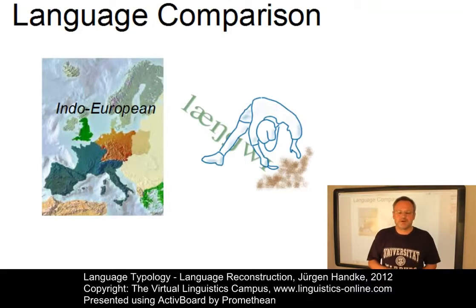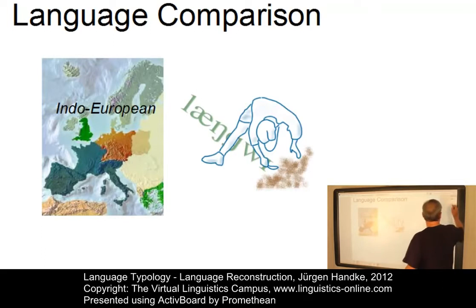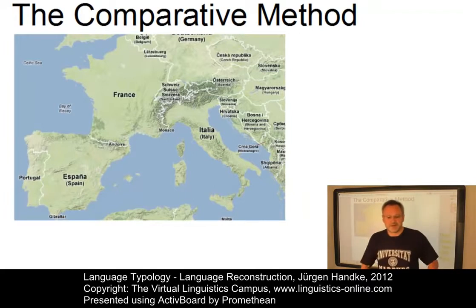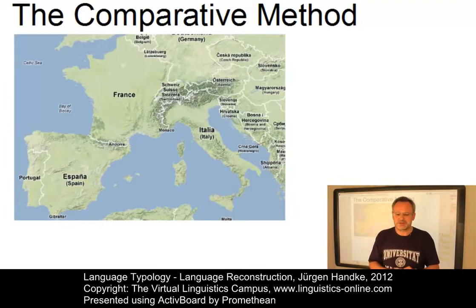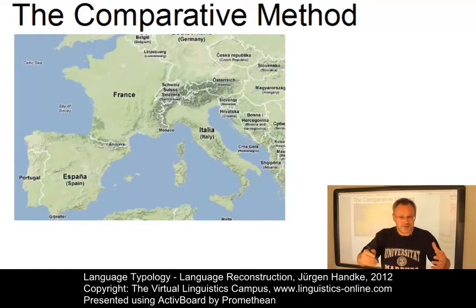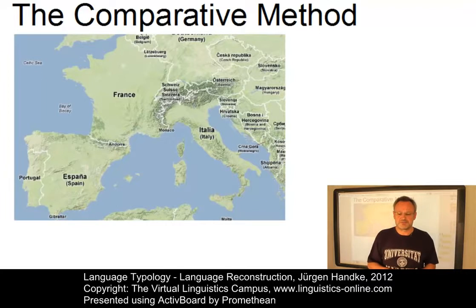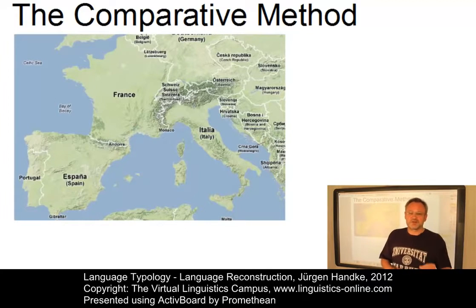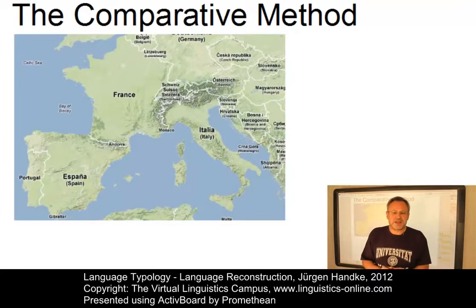The standard way of reconstructing such ancestor languages is referred to as the comparative method. It is a way of systematically comparing a series of languages in order to show a historical relationship between them. Scholars begin by identifying a set of formal similarities and differences between the languages, thus trying to reconstruct an earlier stage from which all forms could have derived. Let us look at the phrase 'the book' in the Romance languages to illustrate the comparative method.